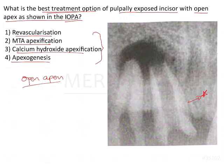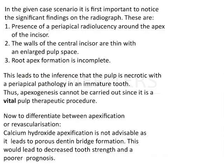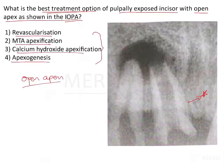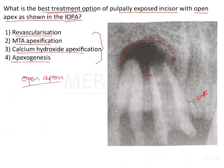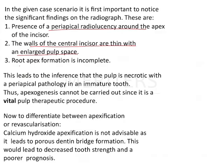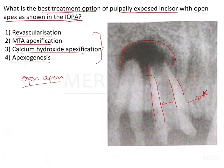There are certain factors we need to keep in mind. On the radiograph there is presence of a periapical radiolucency around the apex — a huge periapical radiolucency is seen. The walls of the central incisors are thin with an enlarged pulp space, and the root apex formation is incomplete, so it is an open apex.